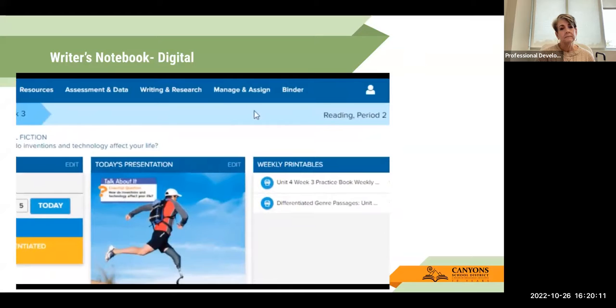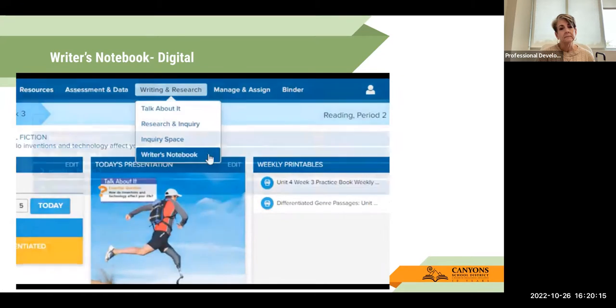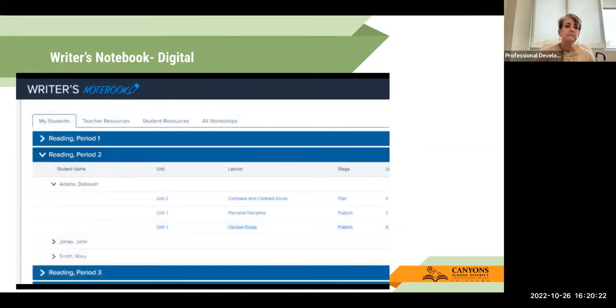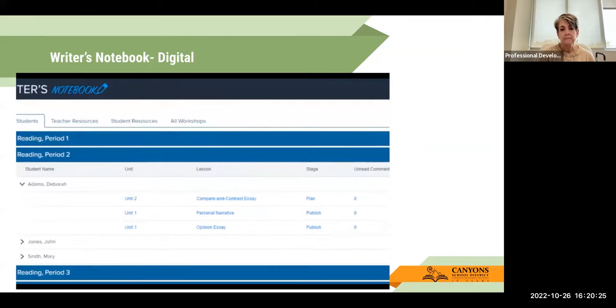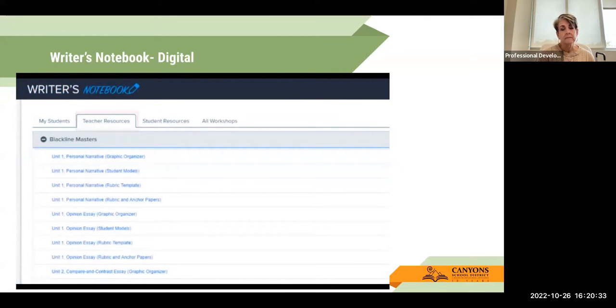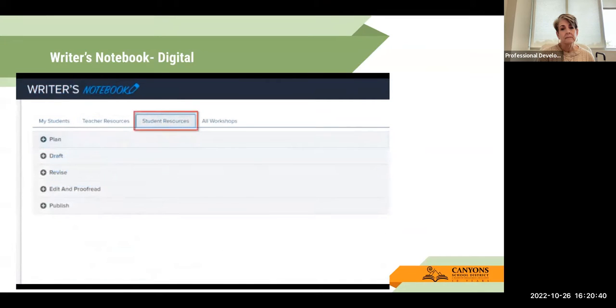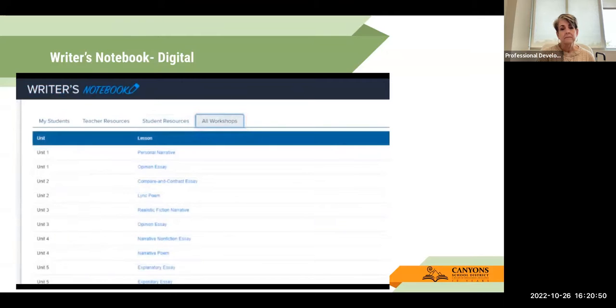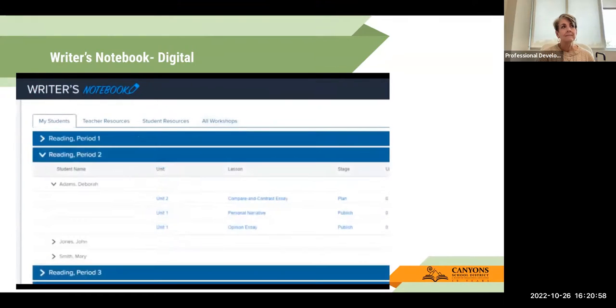Access the writer's notebook by clicking writing and research at the top of the screen and selecting writer's notebook. The writer's notebook opens on the My Students tab. Expand a class blade to view your students. Expand a student blade to view the workshops this student has worked on. They are listed by unit, lesson, and the stage the student has completed. The teaching resources tab lists all the resources available to help you when reviewing your students writing. Click a resource to open it. The student resources tab lists the resources available to your students at each stage of the writing process. Click a resource to open it. The all workshops tab lists all 12 exercises. Click a lesson title to preview the exercise instructions and available resources. You'll have to open the lesson for a particular student on the My Students tab to view that student's work.